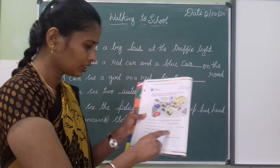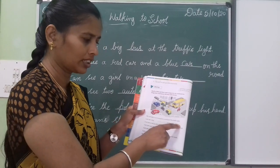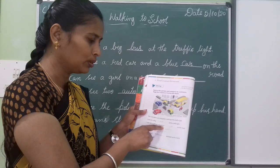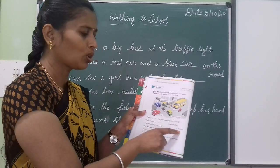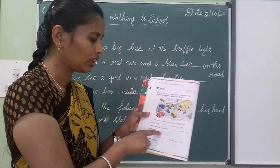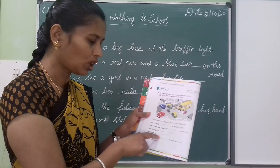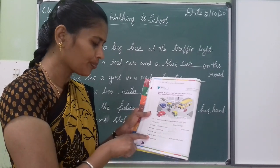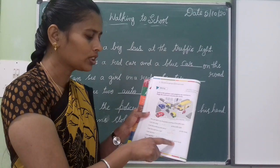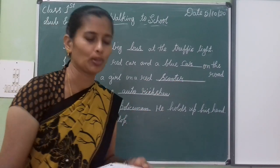Let's read all the sentences: I can see a big bus at the traffic light. I can see a red car and a blue car on the road. I can see a girl on a red scooter. I can see two auto rickshaws. I can see the policeman. He holds up his hand. This means stop.